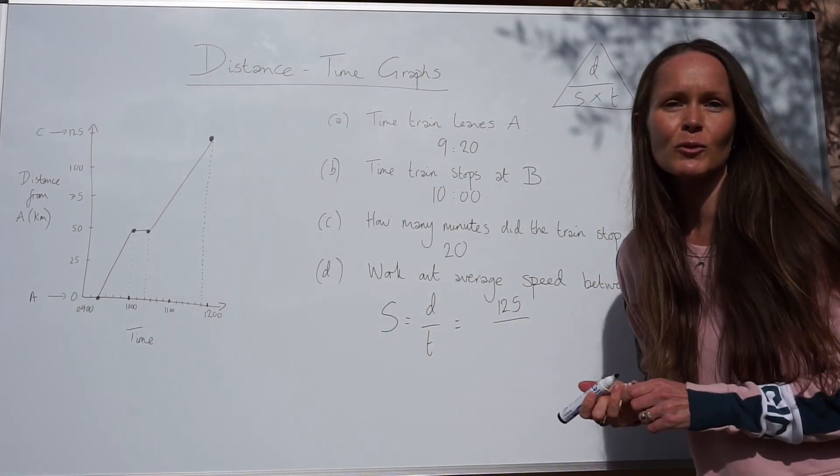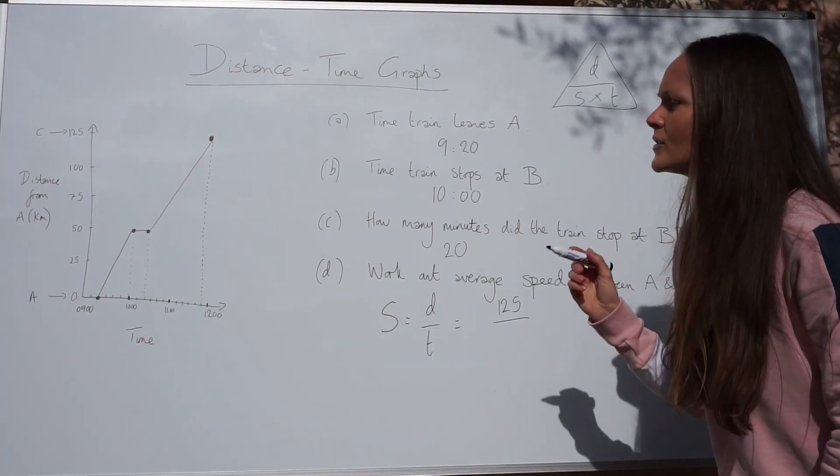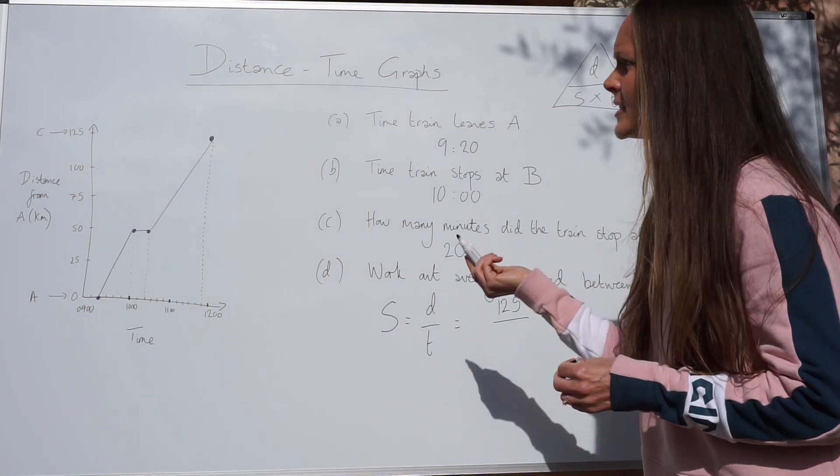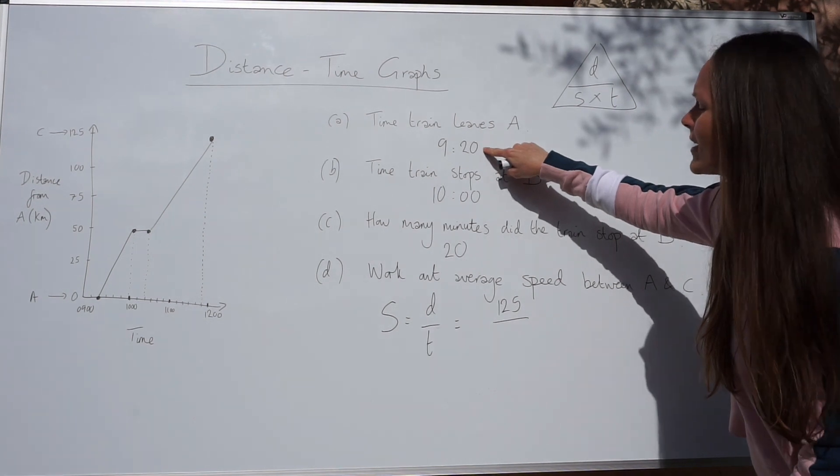It's the time that's a little bit more tricky. Before I write down the time, I just want to note the time the train left A and the time it arrived at C. So we know from here, the train left at 9.20.